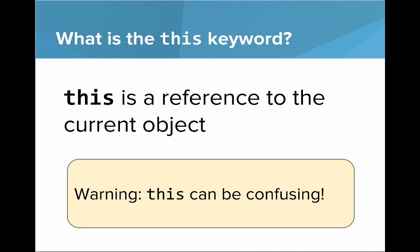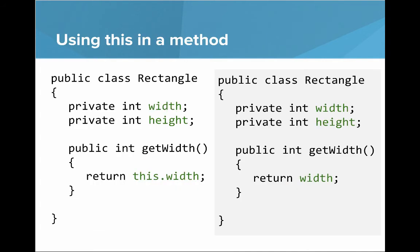Let's say we want to talk about using this in a method. Let's say we have a getter method called getWidth. You could say return width. That's going to get the instance variable. You could also say return this.width. Those will do the same thing.